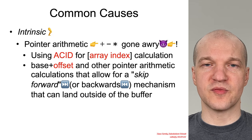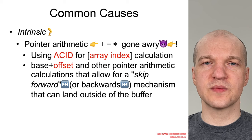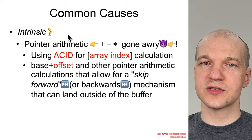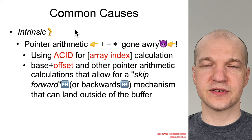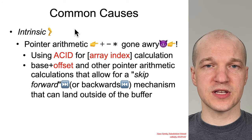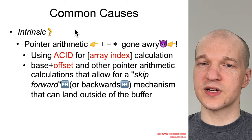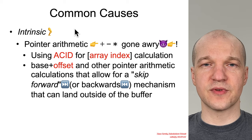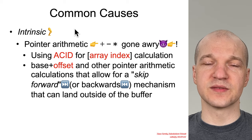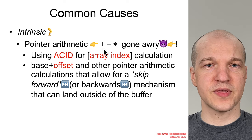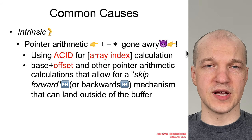For the common causes of out-of-bound writes, I'm going to make a distinction between intrinsic vulnerabilities, which are found directly inside of the source code, and manufactured vulnerabilities where an attacker achieves out-of-bound writes but not directly via problems in the code. With intrinsic vulnerabilities, these are generally down to pointer arithmetic gone awry.